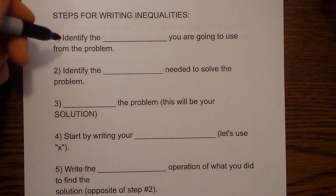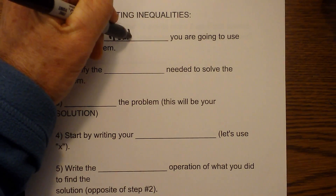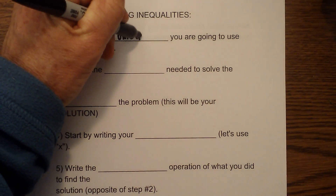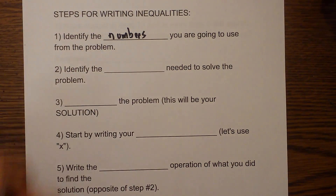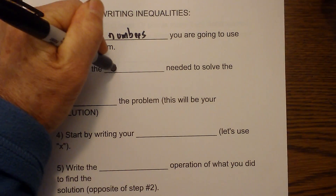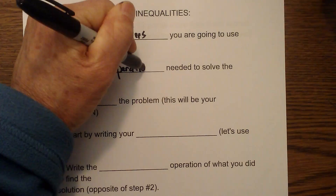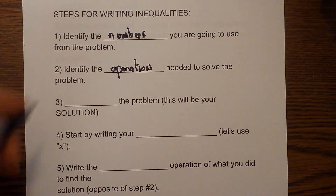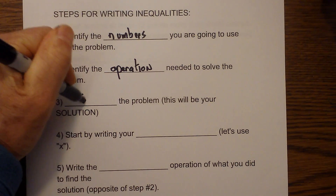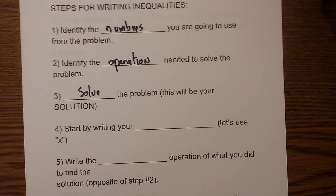First, you'll identify the numbers that you are going to use from the problems. Then you'll identify the operation needed to solve, and then you will solve the problem. Then you'll start by writing a variable.